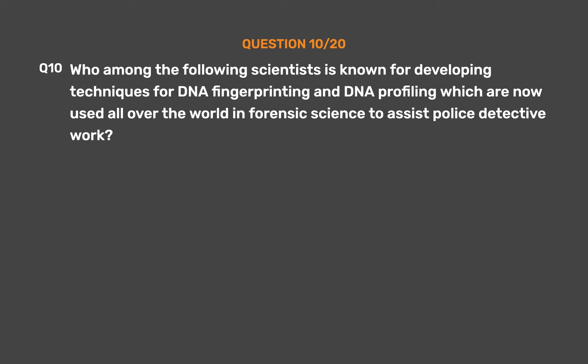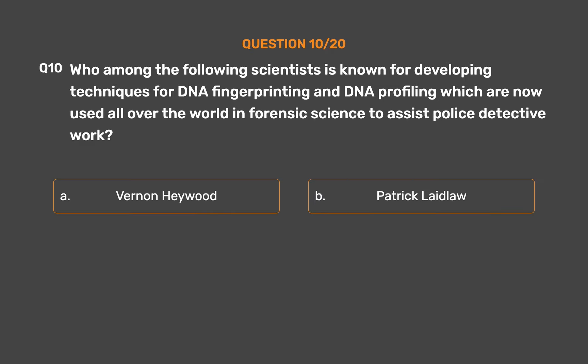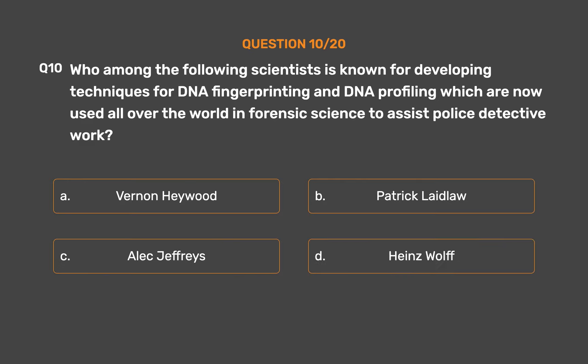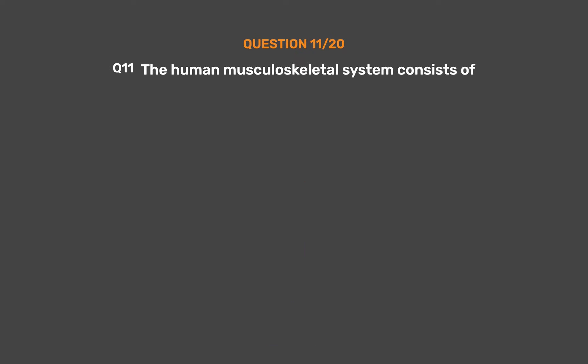Question number ten. Who among the following scientists is known for developing techniques for DNA fingerprinting and DNA profiling, which are now used all over the world in forensic science to assist police detective work? Option A: Vernon Haywood. Option B: Patrick Laidlaw. Option C: Alec Jeffries. Option D: Heinz Wolf. The correct answer is Option C: Alec Jeffries.